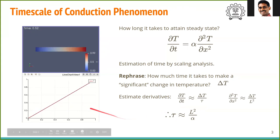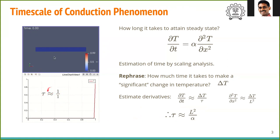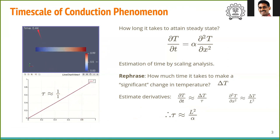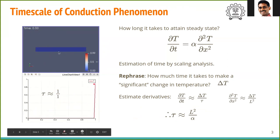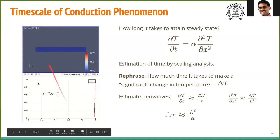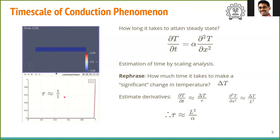In the example shown, L = 1 and α = 1, so τ is of order 1. Looking at the video simulation, by roughly t ≈ 0.3 to 0.4 the temperature has made a significant change and is nearly at steady state — consistent with τ ~ L²/α = 1. So just by estimating L²/α we can estimate how much time it takes for heat to diffuse.